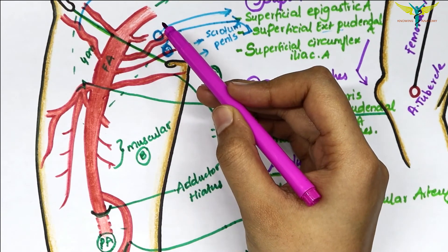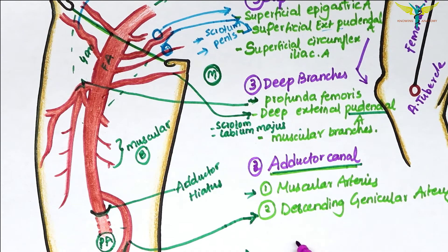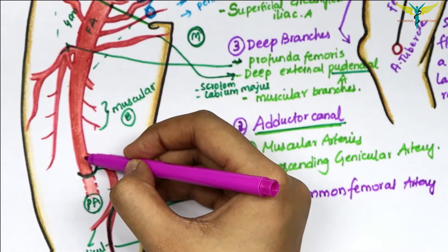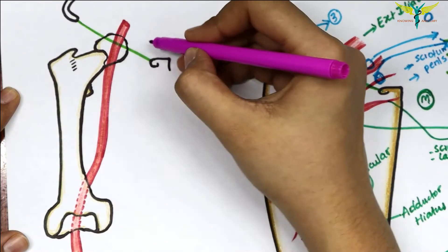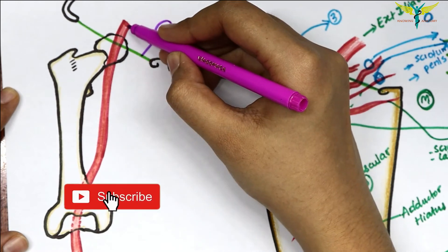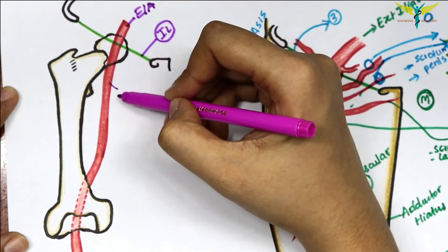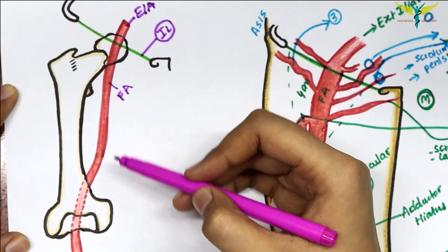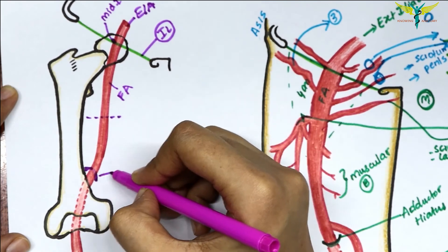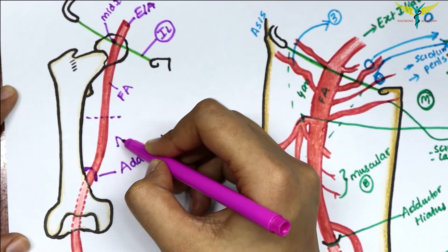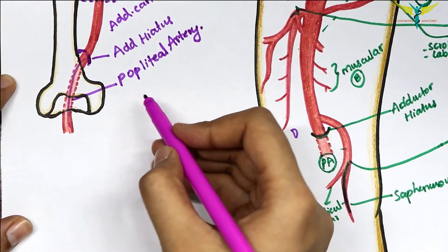The initial part of the femoral artery, proximal to the origin of the profunda femoris artery, is sometimes called the common femoral artery by surgeons, and its continuation distally is called the superficial femoral artery. The external iliac artery continues below the inguinal ligament as the femoral artery, running through the femoral triangle and then the adductor canal, after which it continues as the popliteal artery through the adductor hiatus.